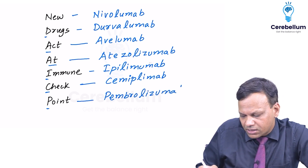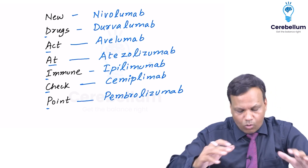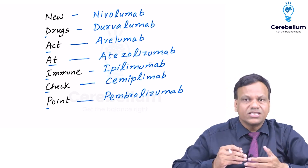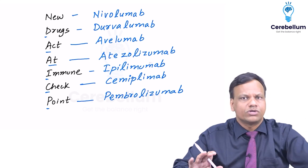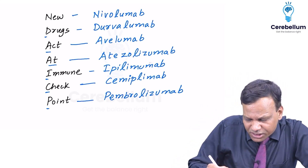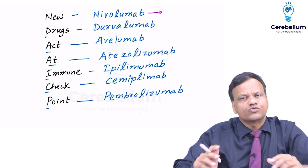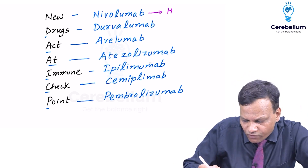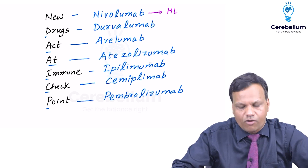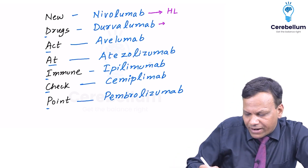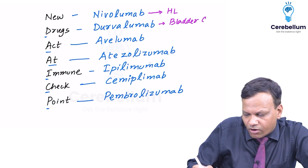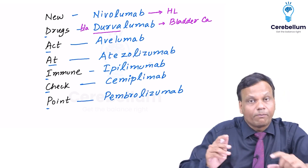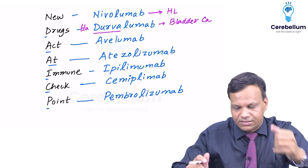Discussing the uses of these drugs: Nivolumab can be used for many types of cancers like lung carcinoma and many others, but the special thing to remember is it is used for Hodgkin's lymphoma. Durvalumab is used for bladder cancer — urinary bladder carcinoma. From the name you can remember: if we write 'BLA' in front, it becomes 'Bladarva' — so bladder cancer.